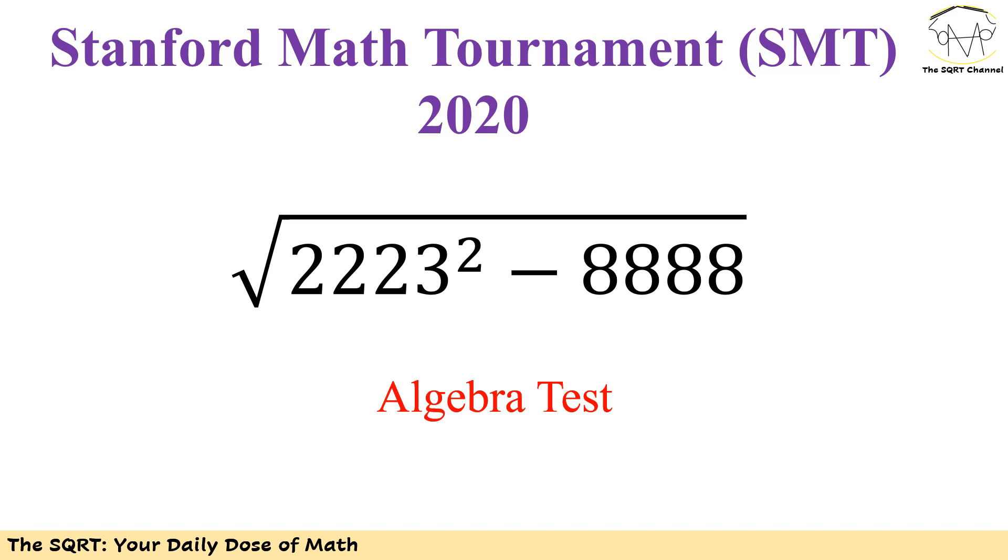In this problem, as you can see, we are going to evaluate the expression that we have here. The expression is pretty simple: we have the radical √(2223² - 8888).